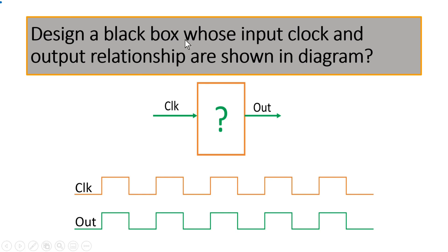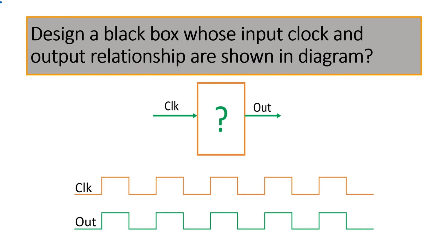You have to design a black box whose input is a clock signal, and the input-output relationship is shown in the diagram. This black box takes clock as input and produces an output signal. The output 'out' is a signal which is similar to the clock signal.